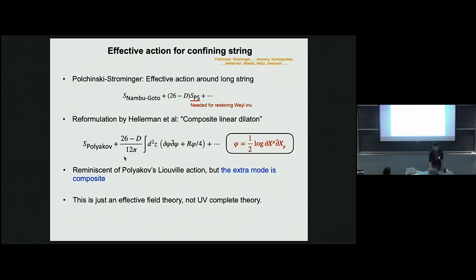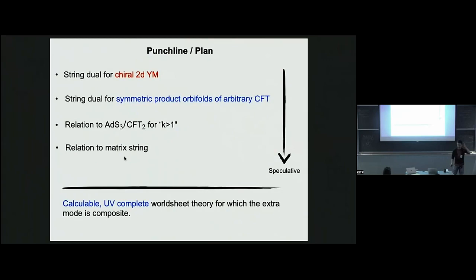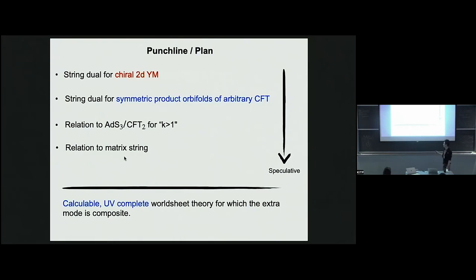This is the punchline and plan of my talk. What I'm going to do is present a string dual — a worldsheet dual — of the chiral 2d Yang-Mills, and I'll point out that some deformation of the worldsheet action can also describe a string dual for a symmetric orbifold CFT or for an arbitrary seed CFT. This is still a proposal and we have some evidence for it. I'll also talk about the relation to AdS3/CFT2 for k not equal to 1, and the relation to matrix string. As you go down the list things become more speculative.